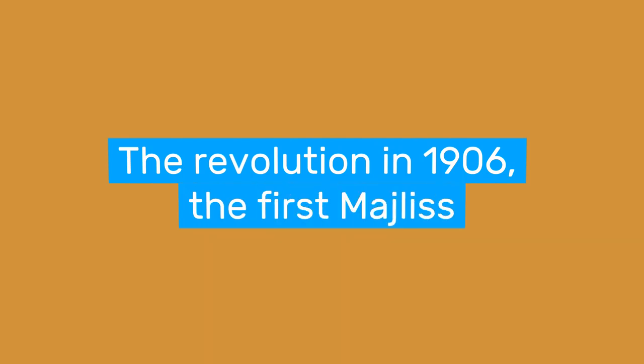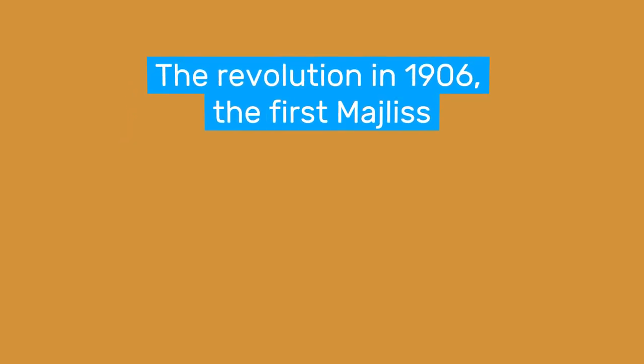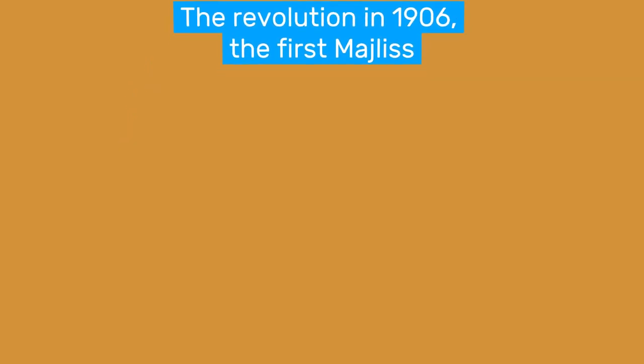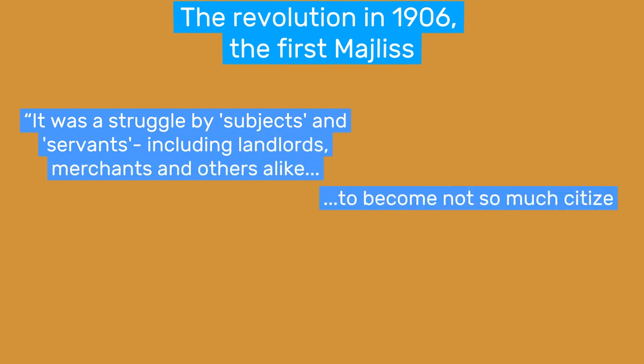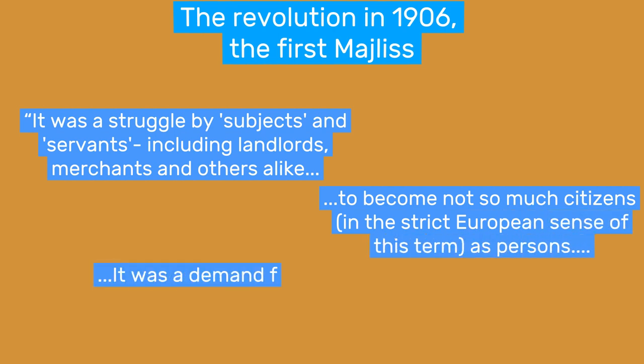It was unlike any other revolt in Persian history, where usually the course of action was to overthrow the corrupt ruler and replace him with a just one. This time the revolutionaries sought to alter the social order, gain representation, and curtail the Shah's power — to end the century-old tradition of arbitrary rule. As one historian puts it, it was a struggle by subjects and servants, including landlords, merchants, and others alike, to become not so much citizens in the strict European sense, as persons. It was a demand for all to enjoy security of life, limb, and property.